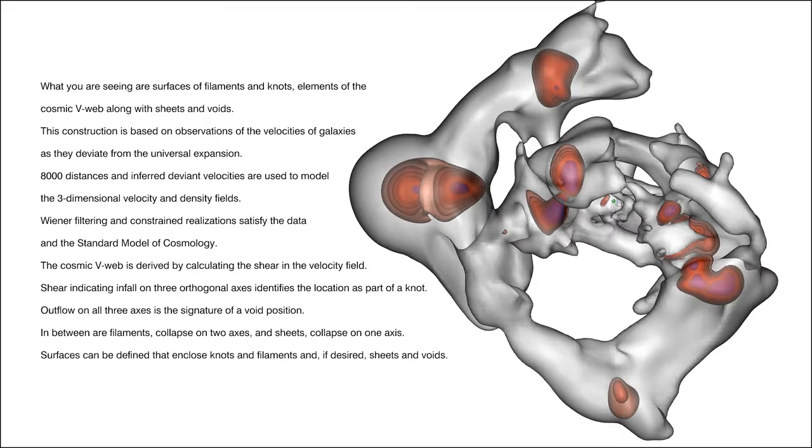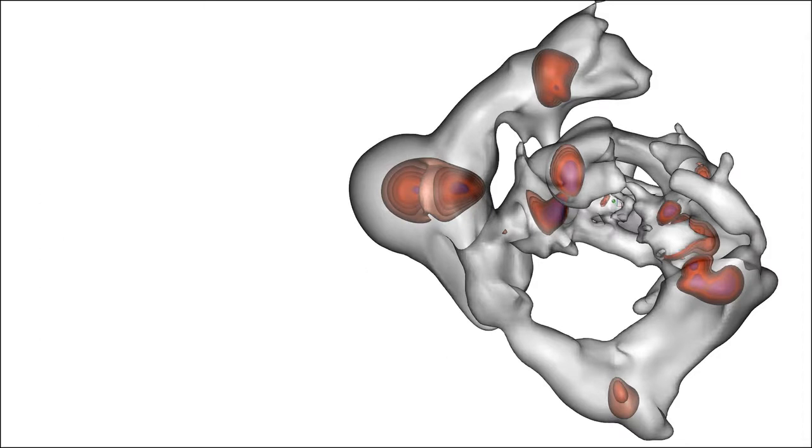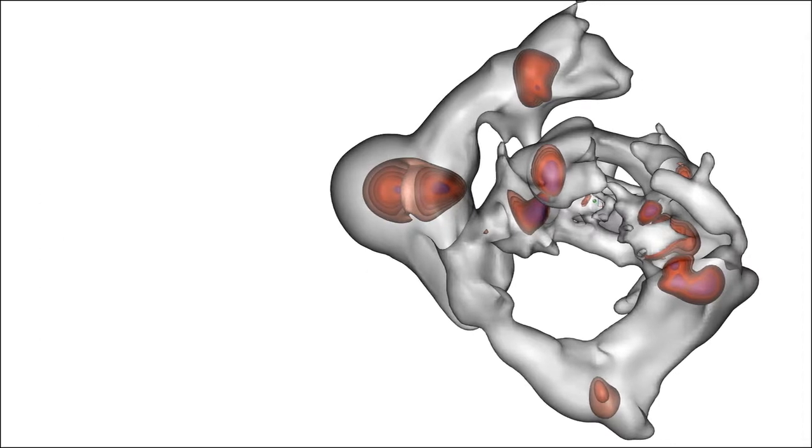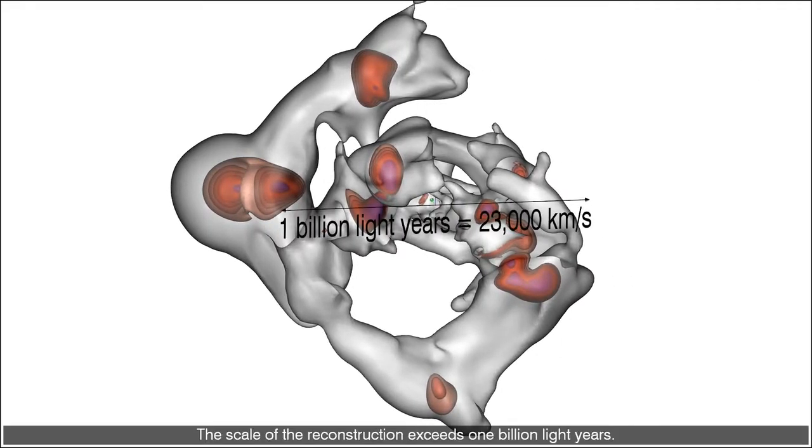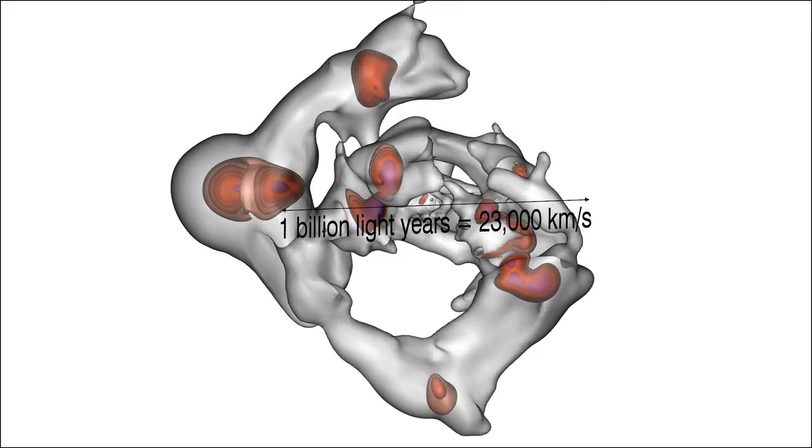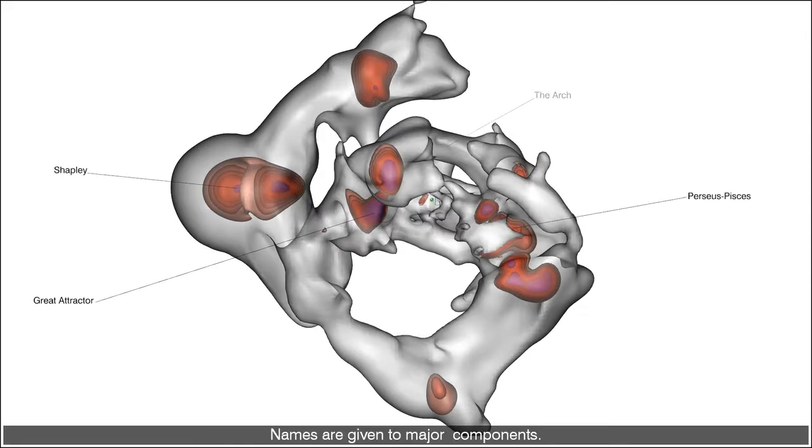Surfaces can be defined that enclose knots and filaments and, if desired, sheets and voids. The scale of the reconstruction exceeds one billion light-years. Names are given to major components.